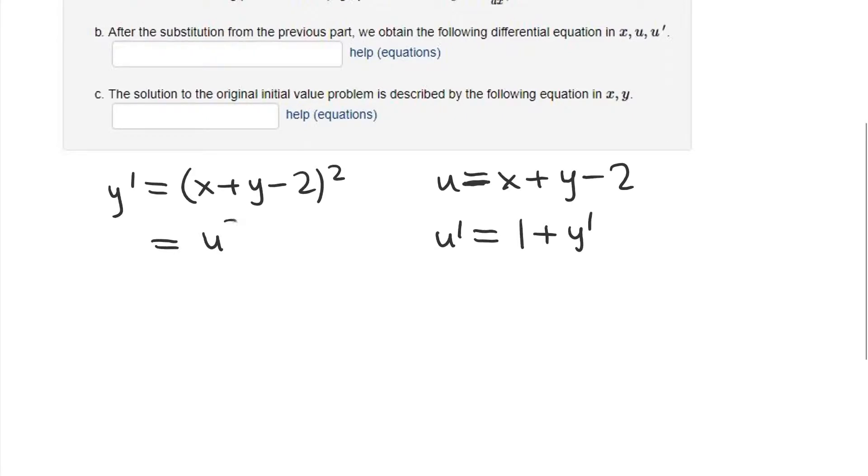on the right-hand side here, I have u². And on the left-hand side, from this equation, you can see y' = u' - 1. So on the left-hand side here, I have u' - 1.